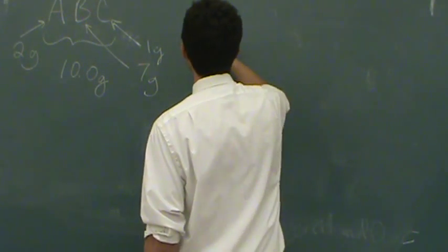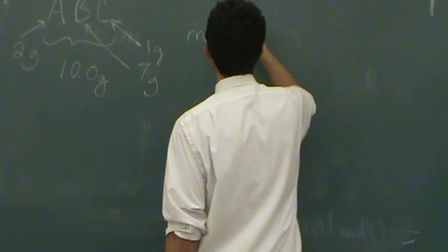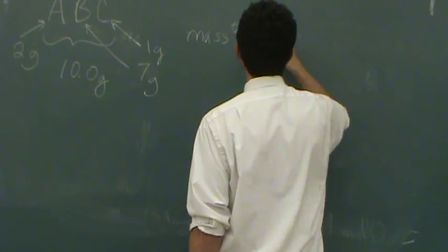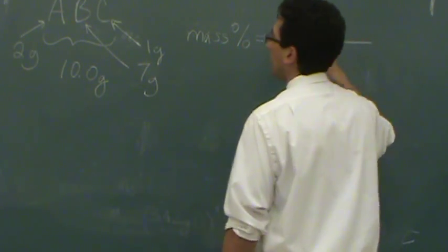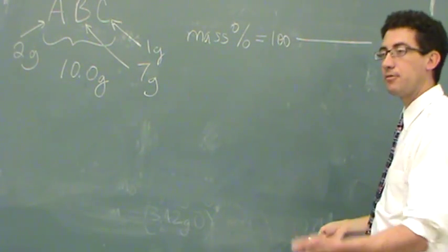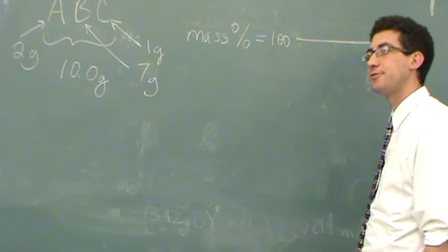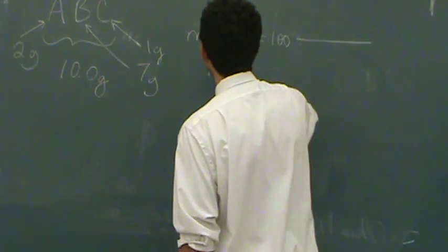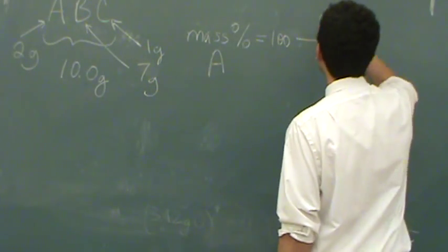So you use the same formula for mass percent as we did a minute ago. Mass percent is going to be 100. Let's say we want the mass percent. Why don't you pick A, B, or C? What's your favorite letter? A. Everybody wants an A, right?